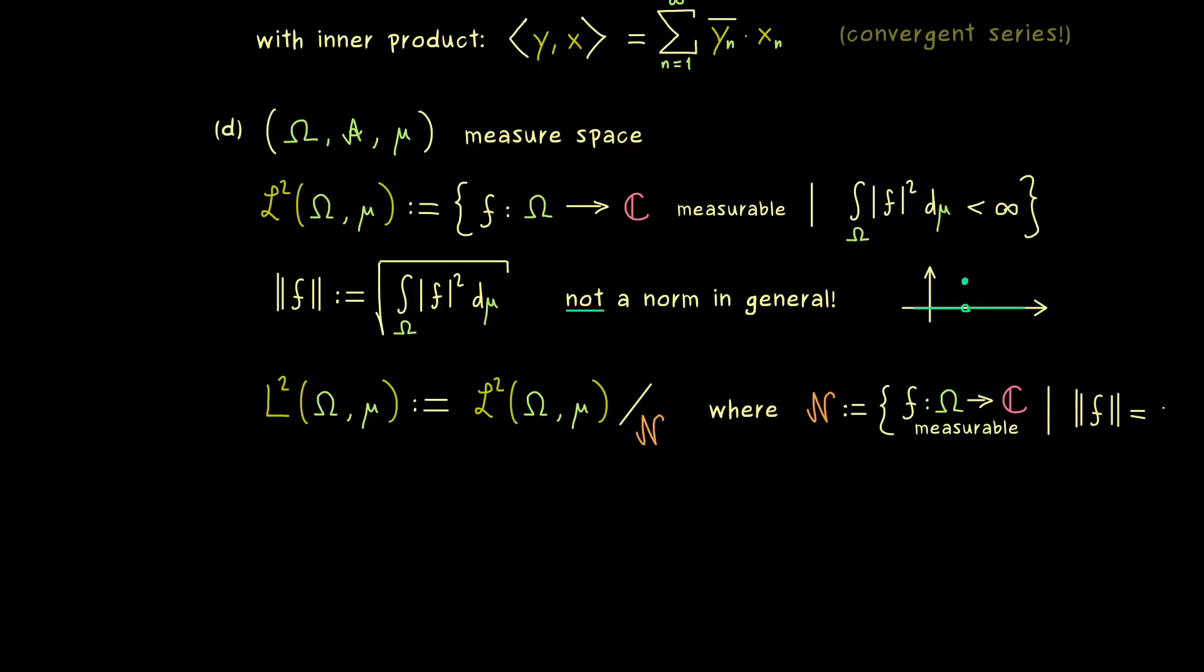So we have all functions f from Ω into C which are measurable as before, where this new norm is equal to zero. Hence, these are indeed the functions we want to divide out of the vector space. So in other words, what we get out here is a set of equivalence classes, where two functions from L² are equivalent if their difference lies in N.